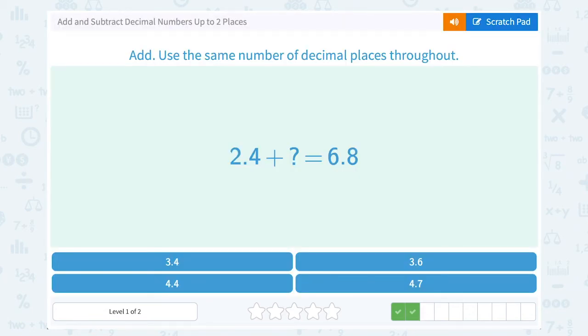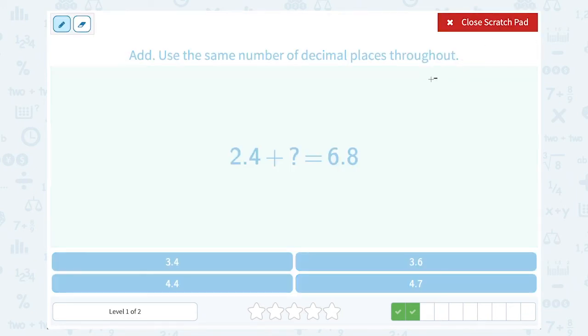2.4 plus what number is equal to 6.8? Well, let's subtract. If we wound up with an answer of 6.8, and I subtract the first number that I added, that should leave me with the difference or what was left for the second number. Lining up those decimal points, subtracting the numbers in the tenths place, 8 minus 4 gives me 4. 6 minus 2 gives me 4. So it must have been 4.4.